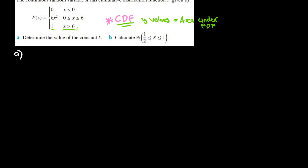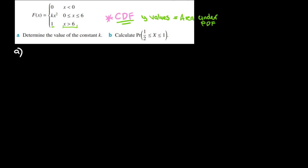Here's another example. We're given that a continuous random variable has a cumulative distribution function — so this is a CDF, not a PDF. We need to interpret it a little differently. We're asked to determine the value of the constant k and calculate a probability. The y-values on a CDF equal the area under the PDF, so I'll sketch this function to help find k.